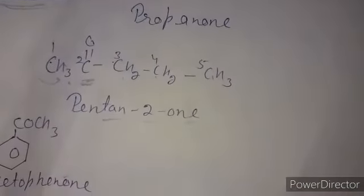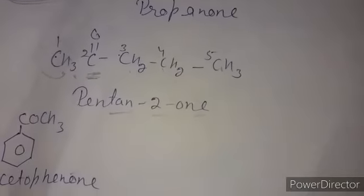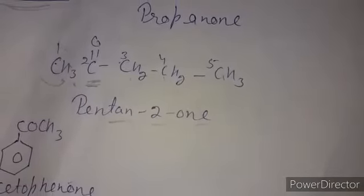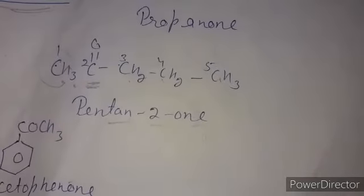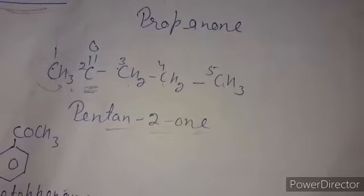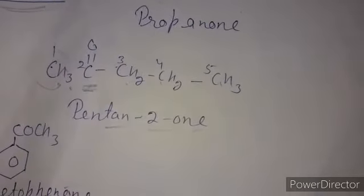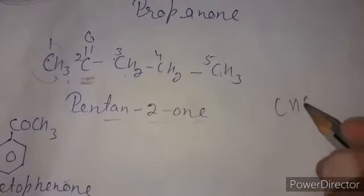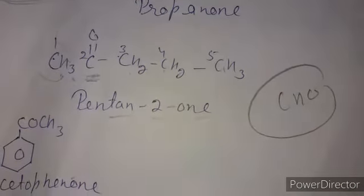For aromatic aldehydes and ketones, we always use the common name. When both an aromatic ring and an aldehyde group are in the same compound, we regard aldehyde as the principal functional group instead of ketone, and the ketone acts as a prefix — 'oxo'.